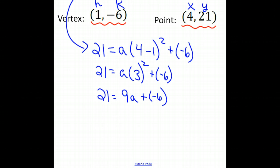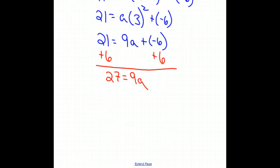So now to solve for a, we're going to add 6 to both sides. And we get 27 equals 9a. We can divide both sides by 9, and we get an a value of 3. Therefore,